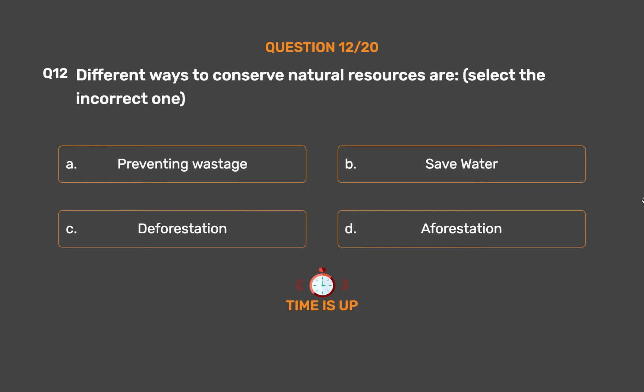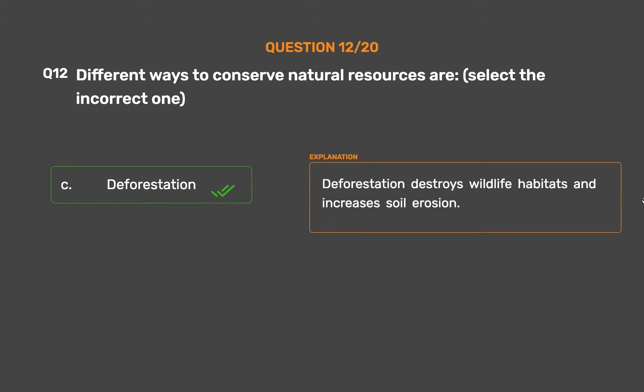The correct answer is Option C: Deforestation. Deforestation destroys wildlife habitats and increases soil erosion.